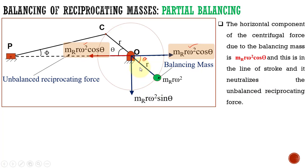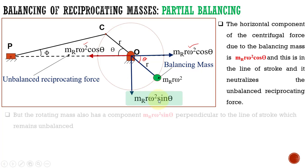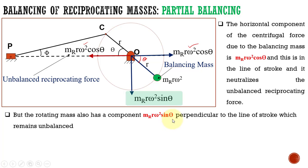But what happened to this vertical force? That is the big question. Because we are able to balance the horizontal unbalanced reciprocating force by adding this balancing mass — the horizontal component of the centrifugal force neutralizes the unbalanced reciprocating force. But we have got another problem: this vertical centrifugal force, mrω²sinθ, which is perpendicular to the line of stroke, remains unbalanced.